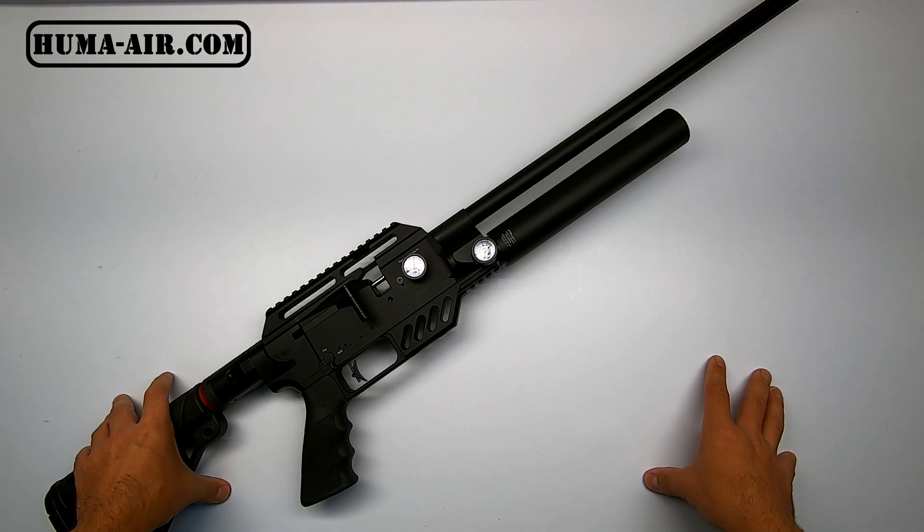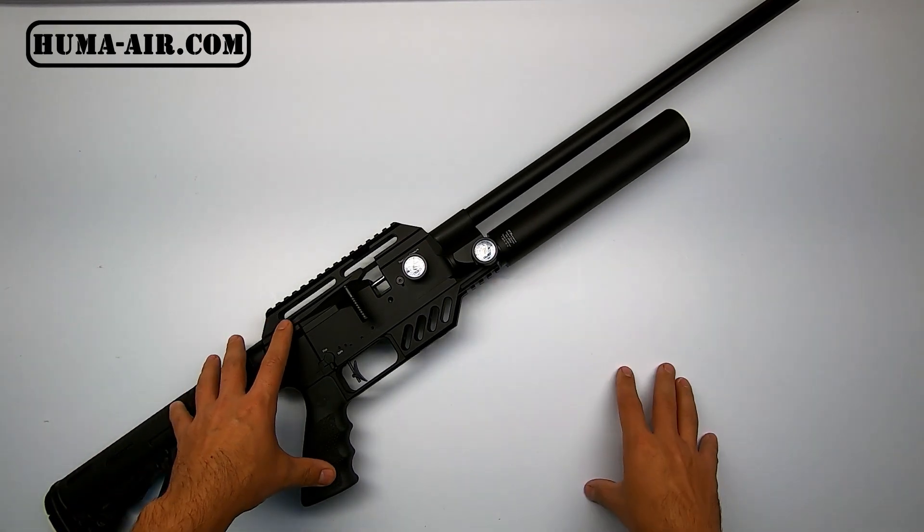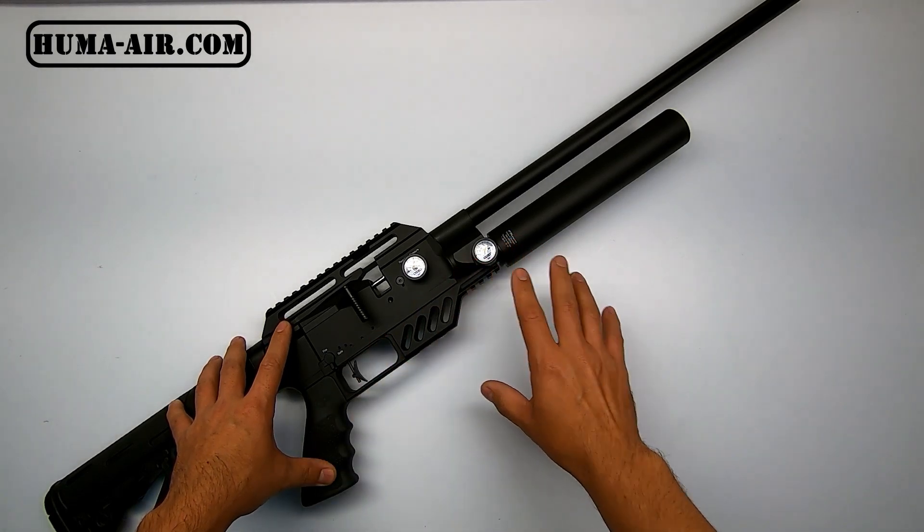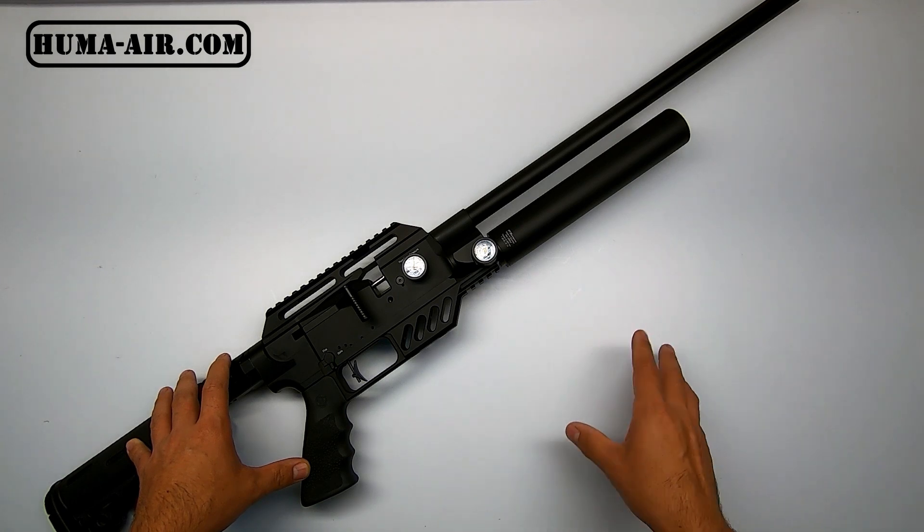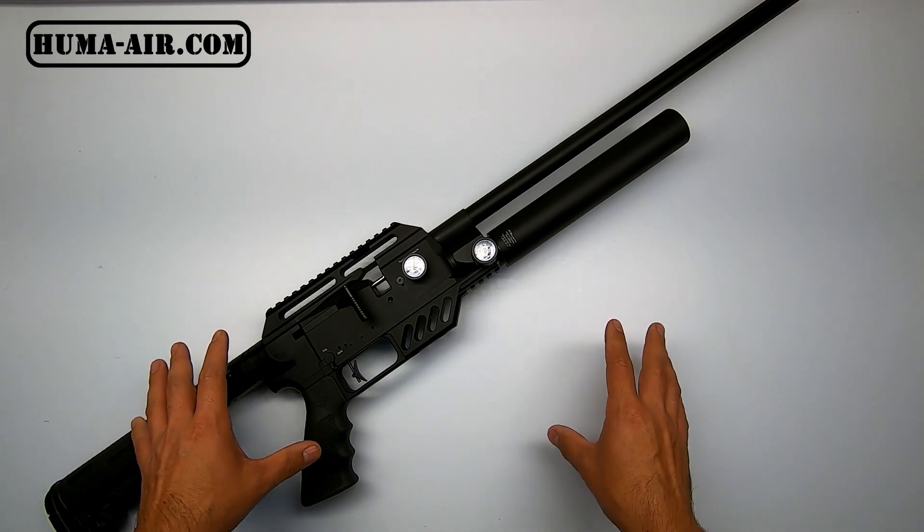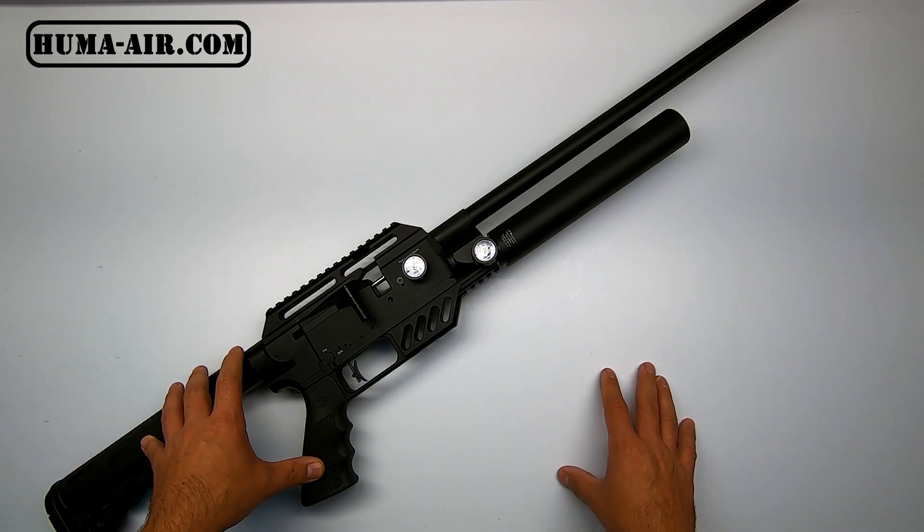So as you could see that gave an instant increase of 20 to 30 feet per second just by adding the Yuma air high flow transfer port without changing any settings on the gun. I've heard from some experienced tuners that they have spent some time with this transfer port, and with some proper tuning you can easily get between 60 to 80 feet per second out of this setup extra.